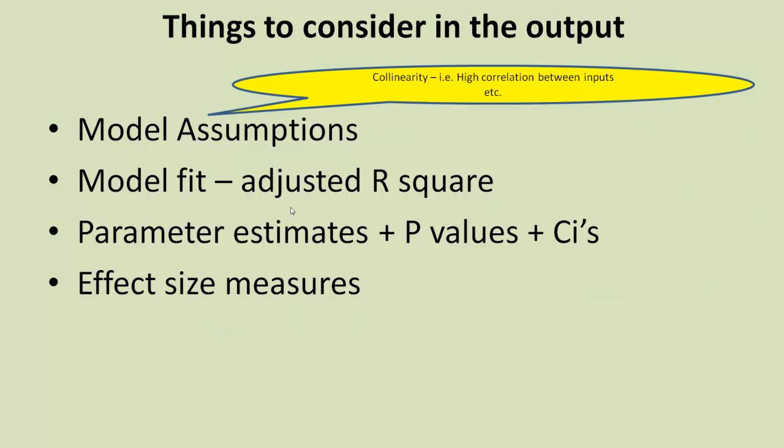We look at these four things because they each give us a different view of what we're considering. First of all, model assumptions. That tells us if we're not putting in rubbish. If we put in rubbish, we only get out rubbish.